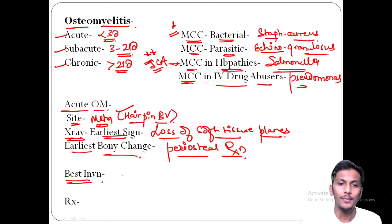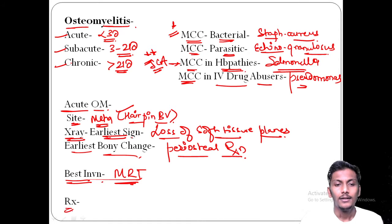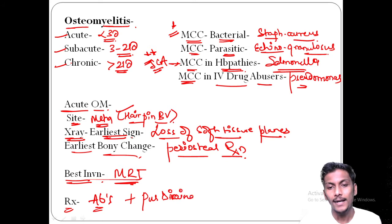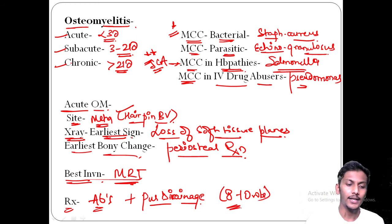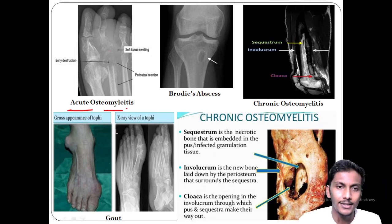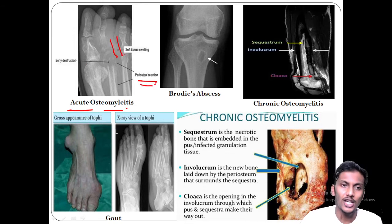The best investigation for osteomyelitis is MRI. Treatment is antibiotics, but when there is a pus-discharging sinus, pus drainage is performed along with antibiotic cover given for 8–10 weeks. The x-ray of acute osteomyelitis shows loss of soft tissue planes, periosteal reaction, and bony destruction from the infection.